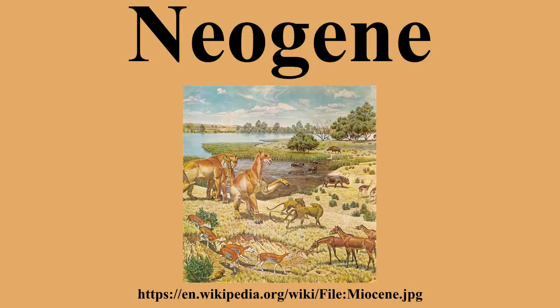Marine and continental flora and fauna were fairly modern at this time. The reptile group Choristodera became extinct in the early part of the period, while the amphibians known as Allocaudata disappeared at the end of it. Mammals and birds continued to be the dominant terrestrial vertebrates and took many forms as they adapted to various habitats. The first hominids, the ancestors of humans, appeared in Africa and spread into Eurasia. In response to the cooler, seasonal climate, tropical plant species gave way to deciduous ones and grasslands replaced many forests. Grasses therefore greatly diversified, and herbivorous mammals evolved alongside them, creating the many grazing animals of today such as horses, antelope, and bison.